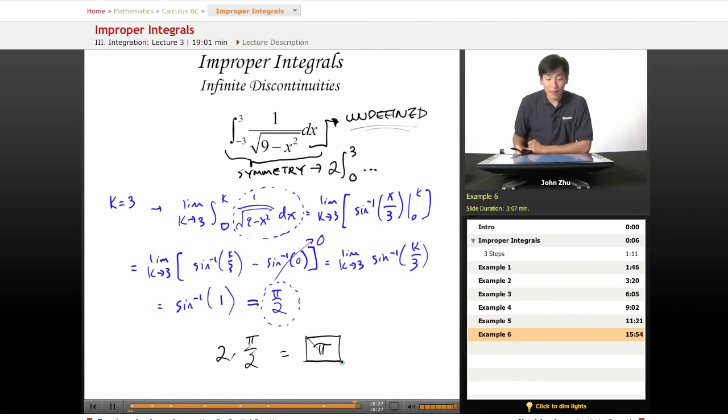So just to recap on improper integrals, we're just following the same procedure every single time by making one of the bounds a variable and taking the limit as that variable approaches the bound, 3 in our case, and taking the integral from one bound to another.